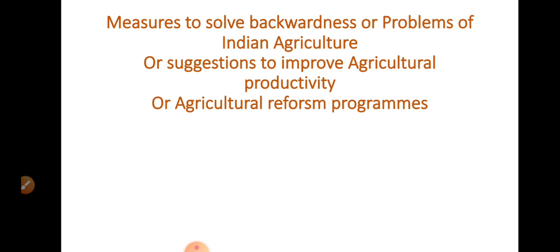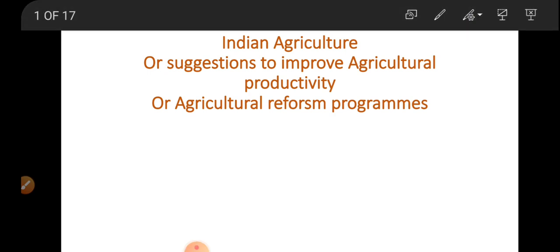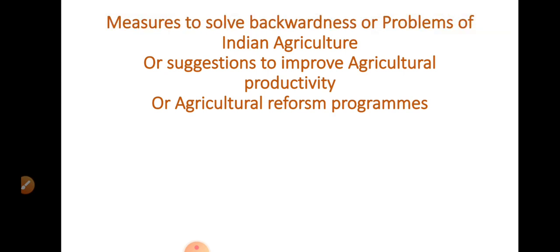There are certain problems due to which it has become difficult for the farmers to face those issues, and due to which certain farmers have no other option but to go for suicide. So in this topic I am going to discuss the various measures or suggestions through which agriculture productivity could be improved, because it is agriculture productivity which causes problems. If we take steps to improve it, many problems of Indian agriculture are automatically solved. I am Shelly Bhutra, your economics teacher.